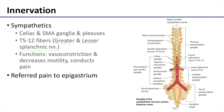These preganglionic sympathetic fibers spread out at the root of the celiac artery, synapse in the celiac ganglion, and then the postganglionic fibers spread out as sympathetics within the celiac plexus.